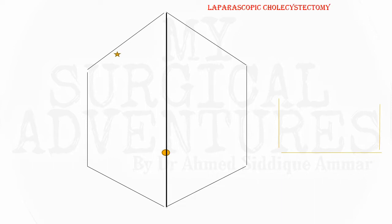The target area is the right hypochondrium where the gallbladder lies, and all instruments will be directed toward this area. The length between the xiphisternum and symphysis pubis is roughly 36 centimeters in adults. In pediatric patients the length may be less, and in obese patients it may be more. Accordingly, laparoscopic instrument lengths also vary, but in a normal adult the length is 36 centimeters — the same as the standard adult laparoscopic instrument.